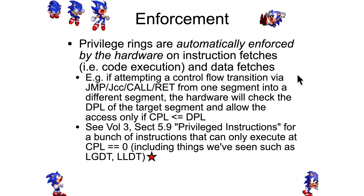If you're trying to do a control flow transition from one segment to a different segment via the typical control flow instructions like jump, conditional jumps, call, or return, the hardware is going to automatically check whether the target segment's DPL is greater than or equal to the CPL.